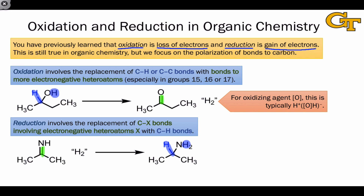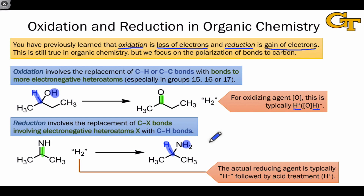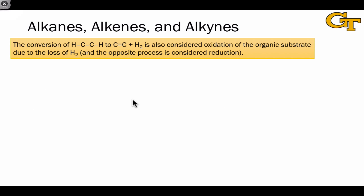To emphasize these points: in an oxidation process, H2 itself usually isn't eliminated. Instead, H⁻ and H⁺ are incorporated into the atoms of the oxidizing agent — in other words, the oxidizing agent itself undergoes reduction through the addition of two hydrogen atoms. In the reduction case, H⁻ is added in the first stage, followed by treatment with an acid to add H⁺, so the net result is the addition of H2 to the substrate. Reduction is therefore typically accomplished through the addition of H⁻ followed by H⁺.